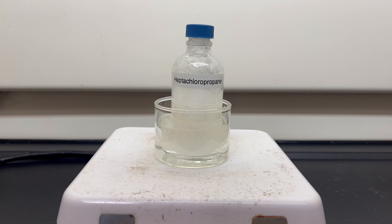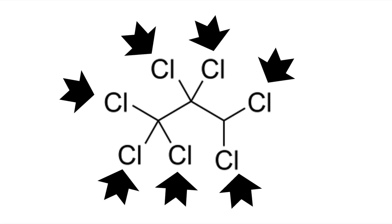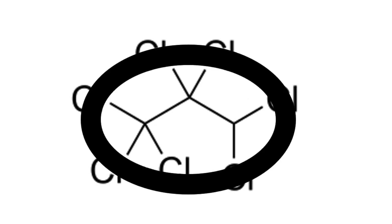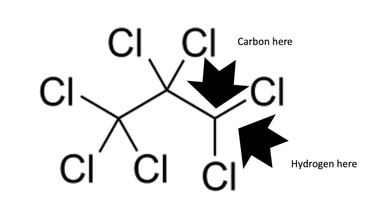I produced heptachloropropane, a polychlorinated aliphatic hydrocarbon, in a previous video. Let's explain what all that means. Polychlorinated means that multiple chlorines are attached. Aliphatic means an open-chain compound that is either straight or branched with carbon. And a hydrocarbon simply means that a compound contains carbon and hydrogen that are bonded together.